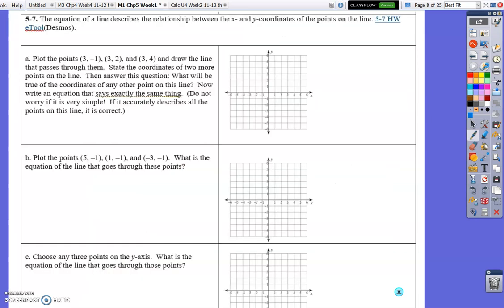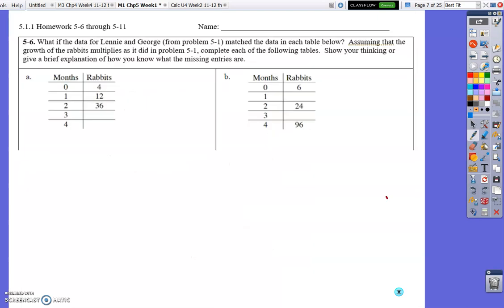So let's start with 5-6. Lenny and George from problem 5-1 match the data. What if their data was this data? Assuming that the growth of the rabbits multiplies, like it did in problem 5-1, complete each of the following tables, show your thinking, or give a brief explanation how you know the missing entries are. So A is really straightforward, so I'm going to leave you to do A.